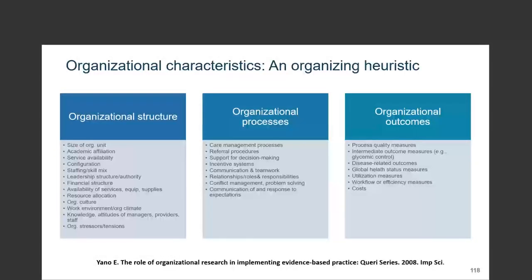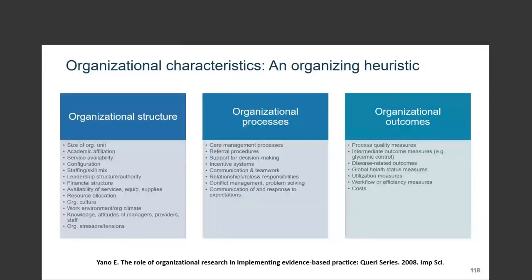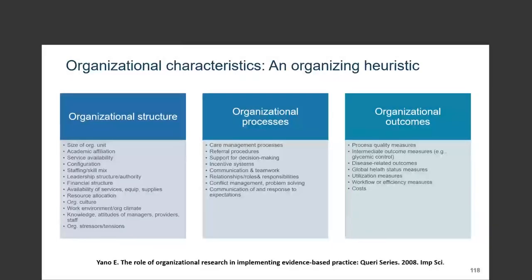And then in turn, thinking about organizational outcomes — so clinic quality metrics and some of those pieces we've talked about earlier today. I share this just as an example heuristic for thinking about the example papers I'll talk through this afternoon. Just in the interest of time, I'm not going to dig into the nitty gritty details of the studies, but really just highlight some of the key organizational variables and outcomes they looked at in order to give you a little bit of a flavor for the panel.